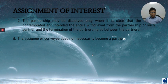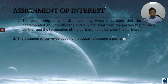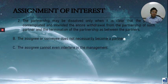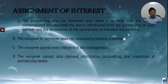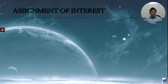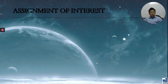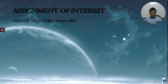Number two: the assignee or conveyee does not necessarily become a partner. Same is true with an associate — they only bought the share. If the partnership continues, the assignee or conveyee does not become a partner. Because the assignee is not a partner, the assignee cannot interfere in the management of the partnership. They cannot demand information, accounting, and inspection of the books.